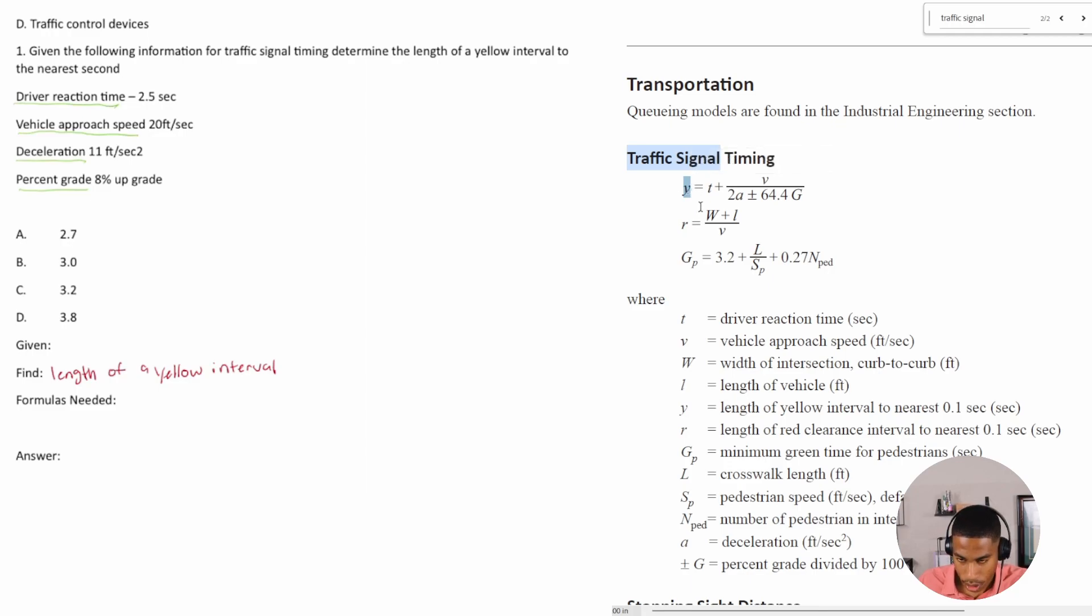Do we have t? So t is the driver reaction time, we have the driver reaction time. Next we check for v, do we have v? Vehicle approach speed, we have the vehicle approach speed. What about a? a is deceleration, we have deceleration.